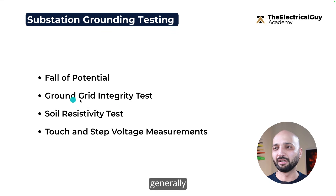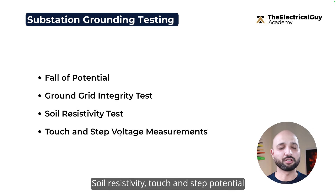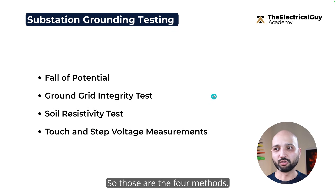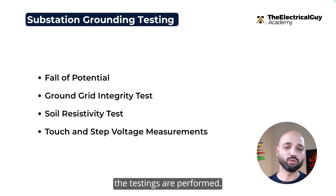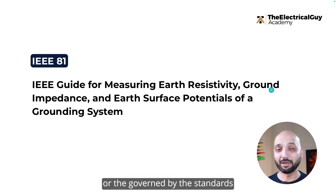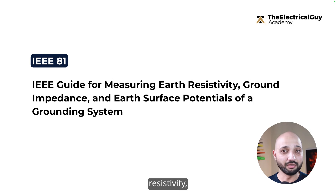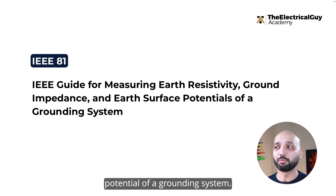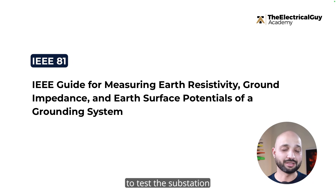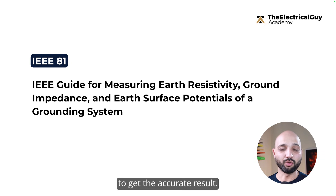Among these four methods, the first two are most commonly used. Soil resistivity and touch and step potential can be performed for a greenfield project — that means a substation that is being newly built. All these testings are generally governed by standards like IEEE 80 and 81, which provide the guide on measurement of earth resistivity, ground impedance, and earth surface potential of a grounding system. These standards define the steps that must be followed to get accurate results.